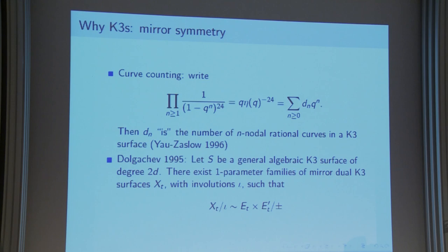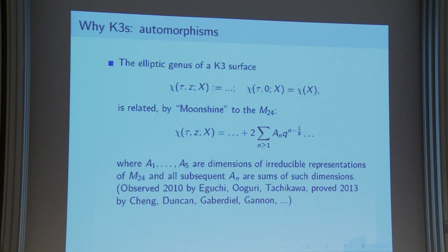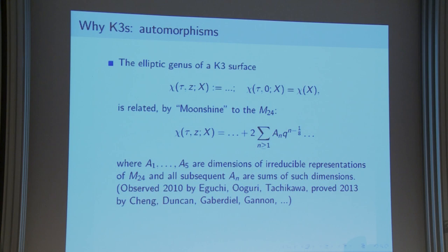If you have an algebraic K3 which is general — rank Picard one — then the mirror thing, at least I can read what it is: there is a one-parameter family of dual K3s of the form one elliptic curve times another by an involution, a Kummer case. There is also something called the elliptic genus, a function of two complex variables. When you evaluate at zero you get the Euler characteristic. When you expand this function, coefficients appear that are dimensions of irreducible representations of the monster group, and subsequent coefficients are sums of such dimensions.